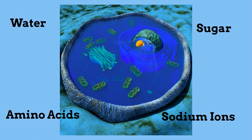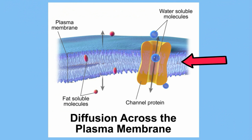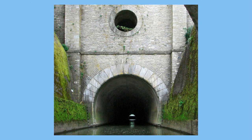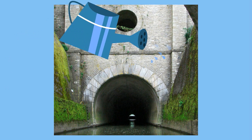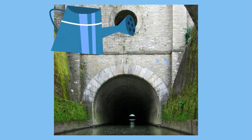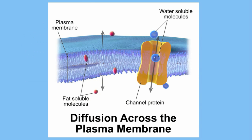The first type of facilitated diffusion is whenever the cell uses a channel protein. Think of a channel protein like a passageway, much like a tunnel. Items can move through the membrane, items like water and certain ions. They still flow from high concentration to low concentration and just pass through this channel protein.